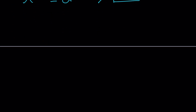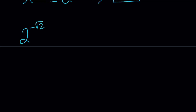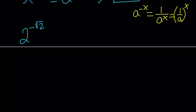I'm going to start off with 2 to the power negative square root of 2 and work with this. Notice that we have a negative exponent. The rule for negative exponents: if you have a to the power negative x, you can write it as 1 over a to the power x, or equivalently as (1/a) to the power x, since 1 to the power x is always 1. So I'm going to write 2 to the power negative root 2 as 1 half to the power root 2.